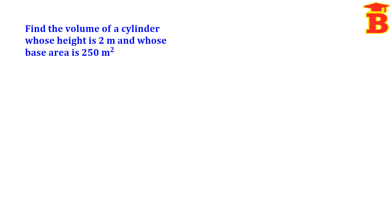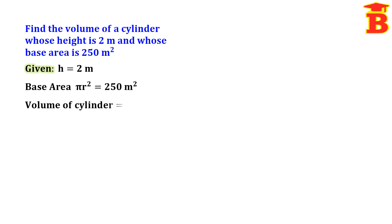Next problem. Find the volume of the cylinder whose height is 2 meter and whose base area is 250 meter square. The volume formula is pi R square H. Since pi R square is given as 250, we substitute: 250 into 2 equal to 500. So the volume is 500 meter cube. Volume is always a cubic unit.